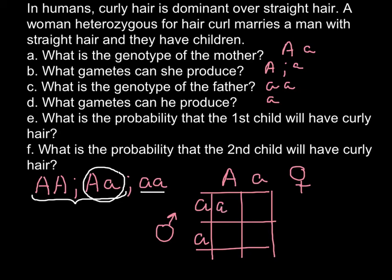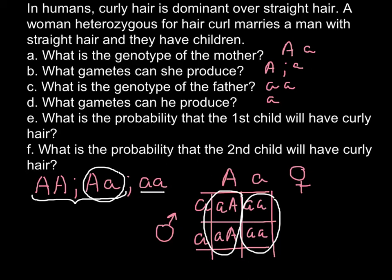Now we build the Punnett square and find the probabilities. The possible offspring genotypes are: capital A small a, small a small a, capital A small a, and small a small a. You can see that 50% of the progeny would have curly hair and 50% would have straight hair. So the probability of having a child with curly hair is one half.